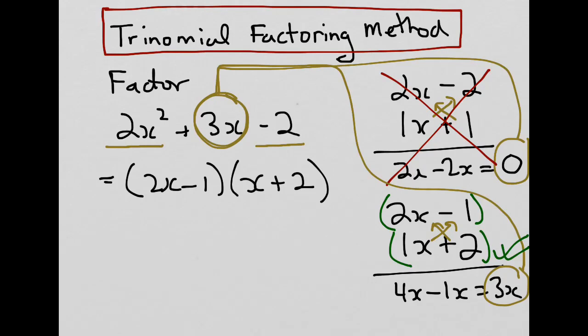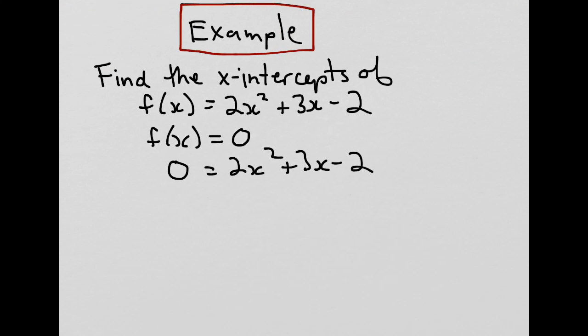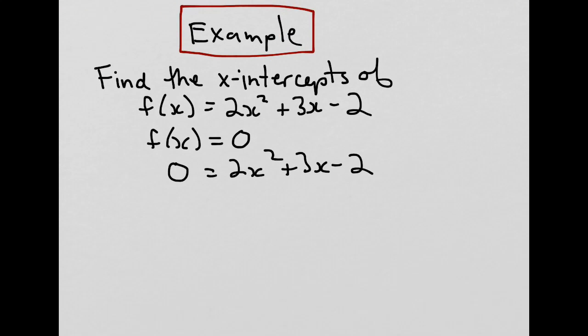Now that we have the factors, let's go back and complete our example. So we know that 0 equals (2x - 1) times (x + 2).